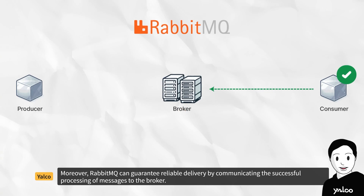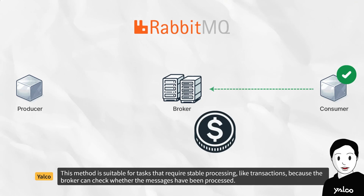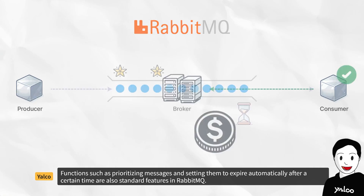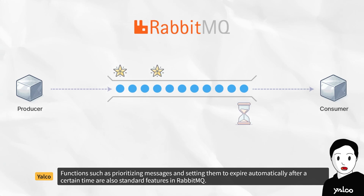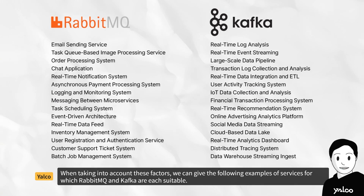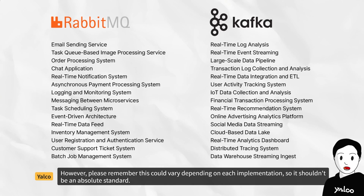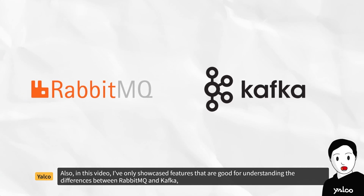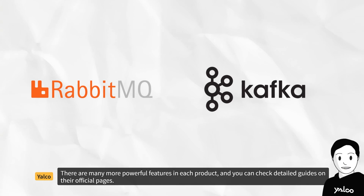Moreover, RabbitMQ can guarantee reliable delivery by communicating the successful processing of messages to the broker. This method is suitable for tasks that require stable processing, like transactions, because the broker can check whether the messages have been processed. Functions such as prioritizing messages and setting them to expire automatically after a certain time are also standard features in RabbitMQ. When taking into account these factors, we can give examples of services for which RabbitMQ and Kafka are each suitable. However, please remember this could vary depending on each implementation, so it shouldn't be an absolute standard. Also, in this video, I've only showcased features that are good for understanding the differences between RabbitMQ and Kafka. There are many more powerful features in each product, and you can check detailed guides on their official pages.